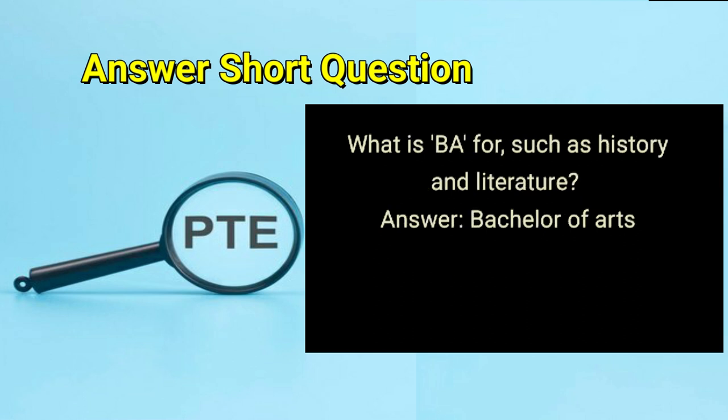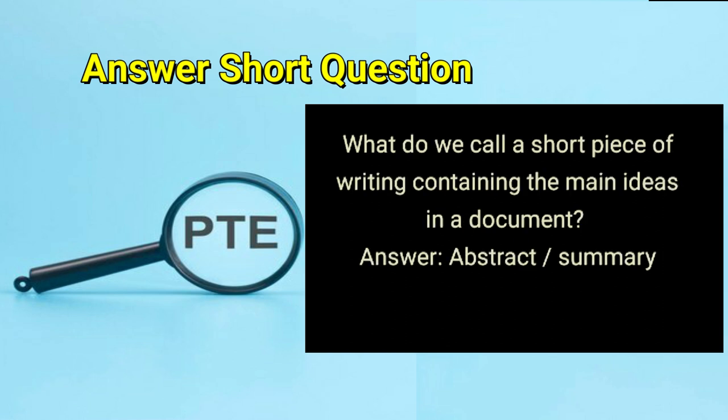What is B.A. for subjects such as history and literature? Answer: Bachelor of Arts. What do we call a short piece of writing containing the main ideas in a document? Answer: abstract or summary.